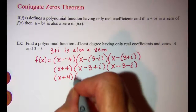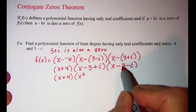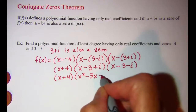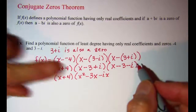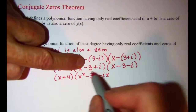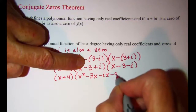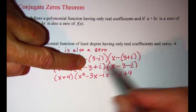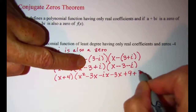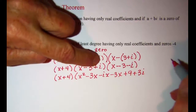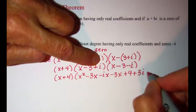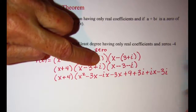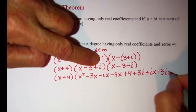x times x is x squared. x times negative 3 is negative 3x. x times negative i is negative ix. Now multiplying negative 3 through: negative 3 times x is negative 3x, negative 3 times negative 3 is positive 9, and negative 3 times negative i is positive 3i. Then multiplying the i through: i times x is negative ix, i times negative 3 is negative 3i, and i times negative i is negative i squared.